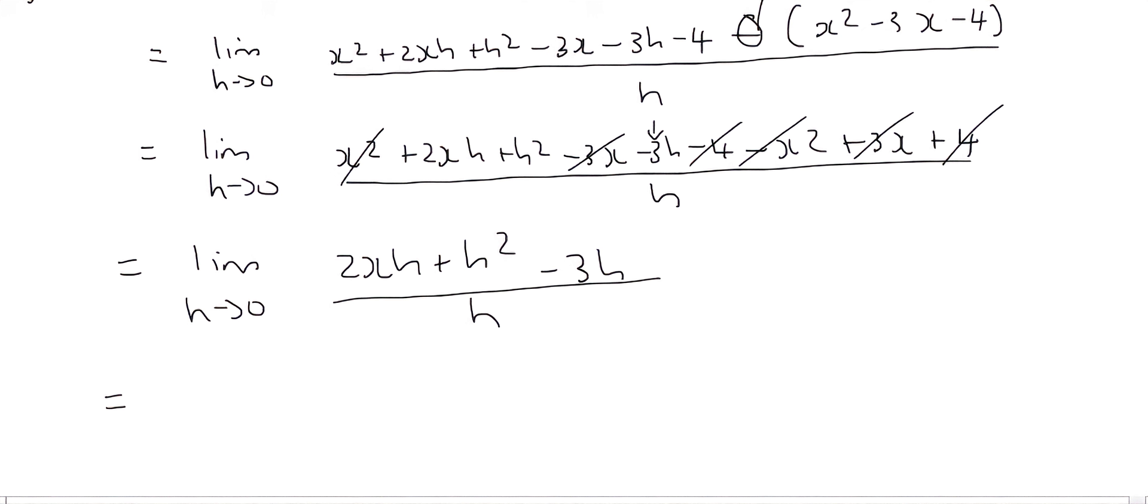Now the reason that is nice is so that in the next step we can take out a common factor. But if there were some terms that did not have an h, like a random plus x over here, you wouldn't be able to take out an h. And then we have h times 2x plus h minus 3 all over h and that can cancel.